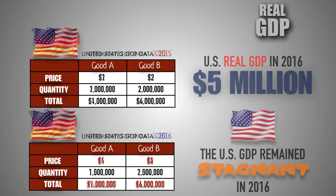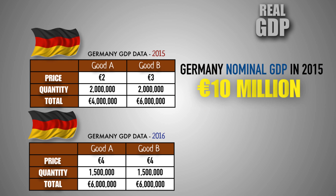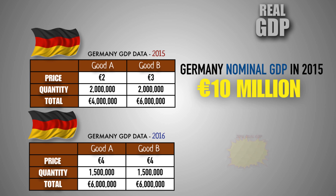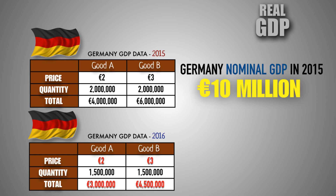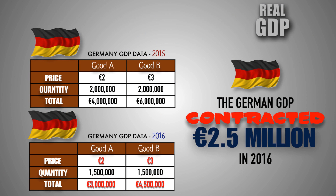In this example, we'll analyze GDP data for the country of Germany. When using prices and domestic output for 2015, we can determine that Germany's nominal GDP in 2015 was $10 million. When using prices and domestic output for 2016, we can determine that Germany's nominal GDP in 2016 was $12 million. Nominally, it would appear that Germany's GDP experienced $2 million of economic growth in 2016. But to truly determine if the economy grew in Germany, we must find the 2016 real GDP by using 2016 domestic output and 2015 price levels. When adjusting for inflation, we can determine that Germany's real GDP in 2016 was $7.5 million. When comparing nominal GDP in 2015 with real GDP in 2016, we can conclude that the German GDP contracted by $2.5 million in 2016.